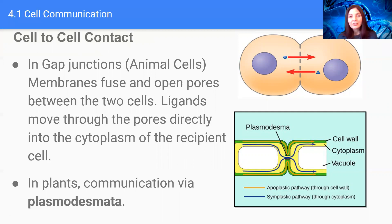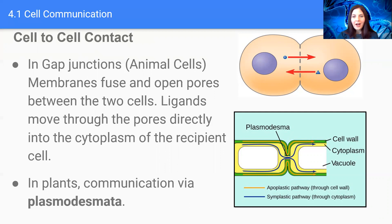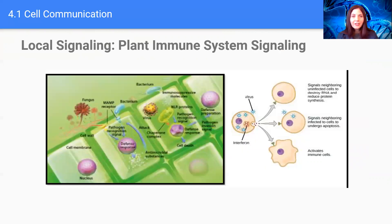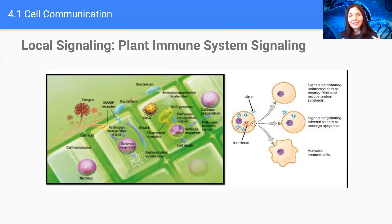In animal cells, that's called a gap junction — that's when the plasma membrane has pores in it. In plant cells, which have cell walls, the pore has to extend from the plasma membrane through the cell wall in order for hormones or signaling molecules to be sent back and forth. This type of signaling is also extremely important for plants' immune systems, and yes, plants too have immune systems just like we do.